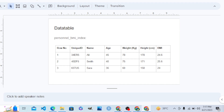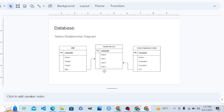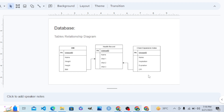Now let's see what a relational database is. As the name suggests, when we form relationships between different tables, it forms a relational database. For example, if we have a health record table, it picks the BMI value from a BMI table, and also picks the chest expansion and X value from another table — a chest index table. When we form relationships between tables like this, it forms a relational database.